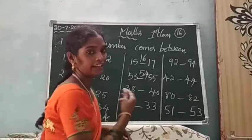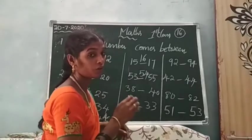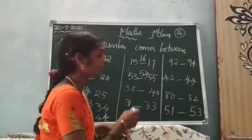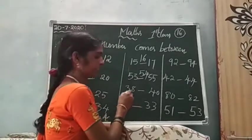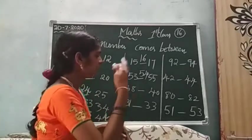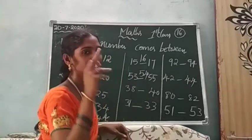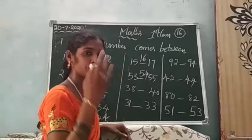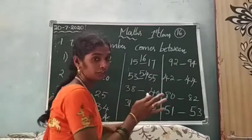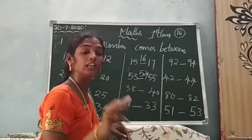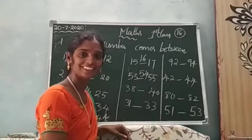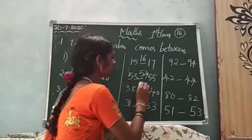In this problem, 38 after — 38 after which number? 38 and 40. Between these two numbers there is only one number. That is 39.